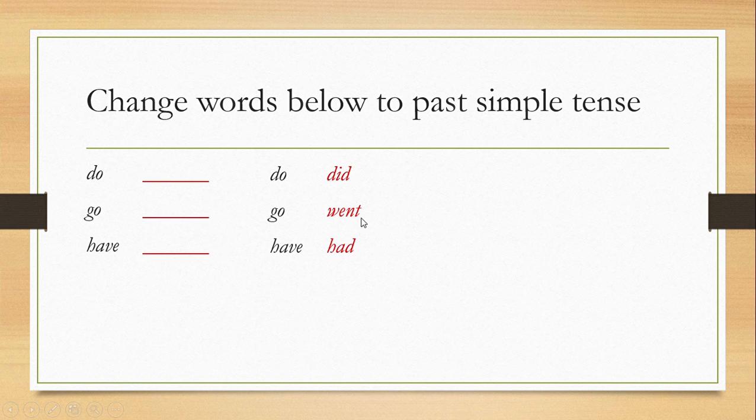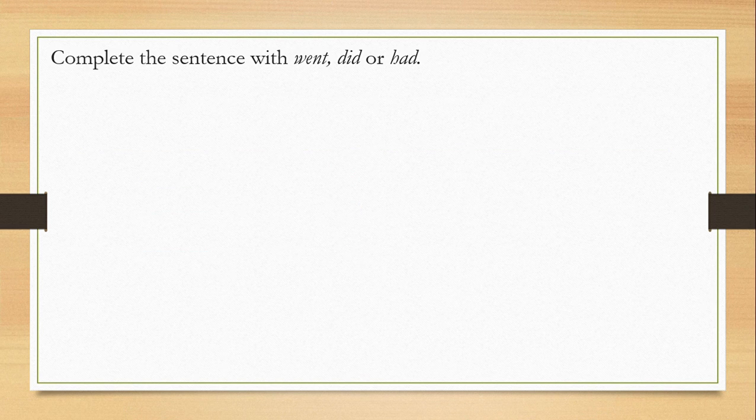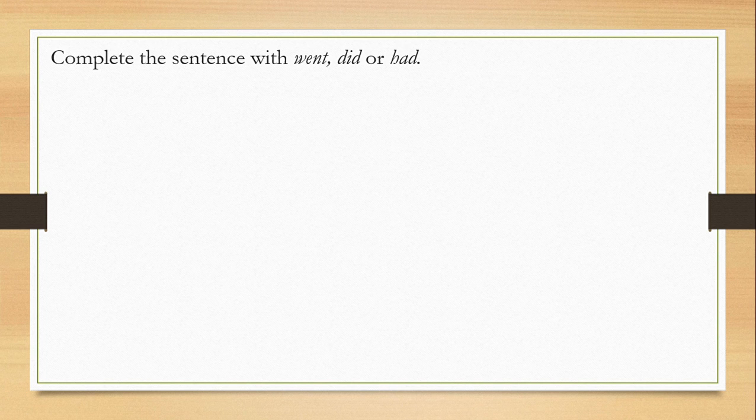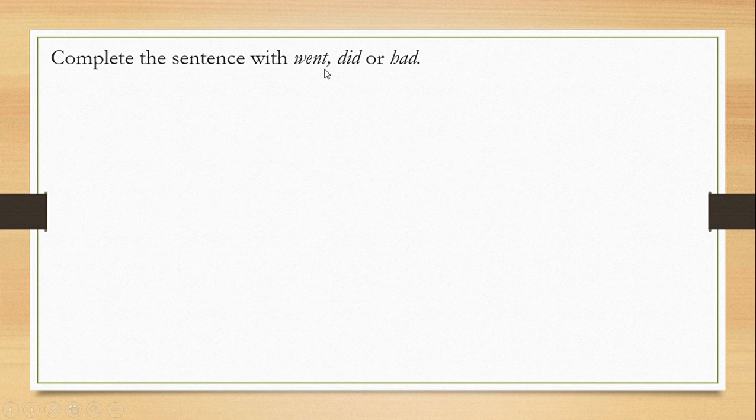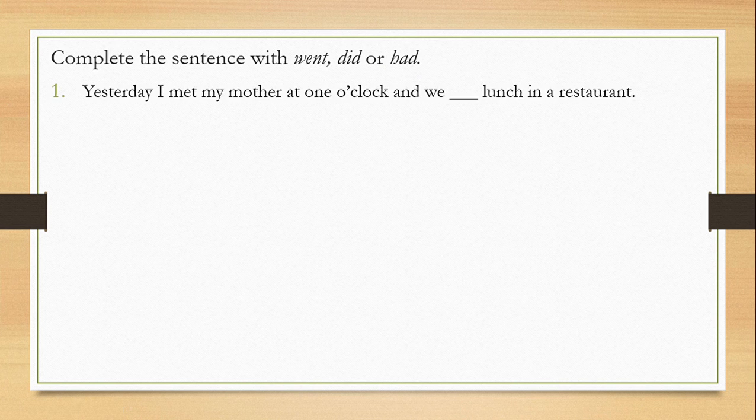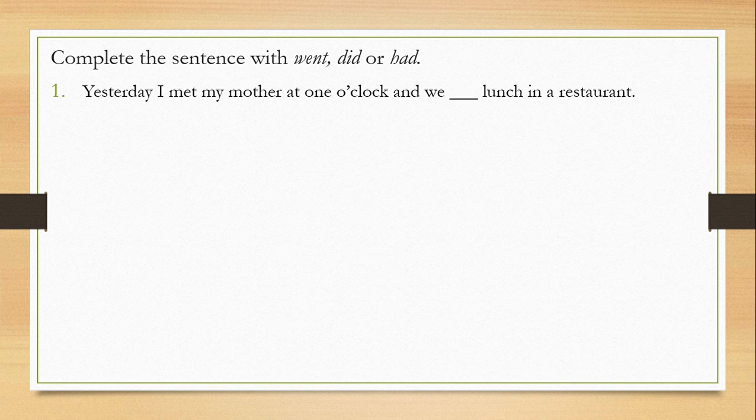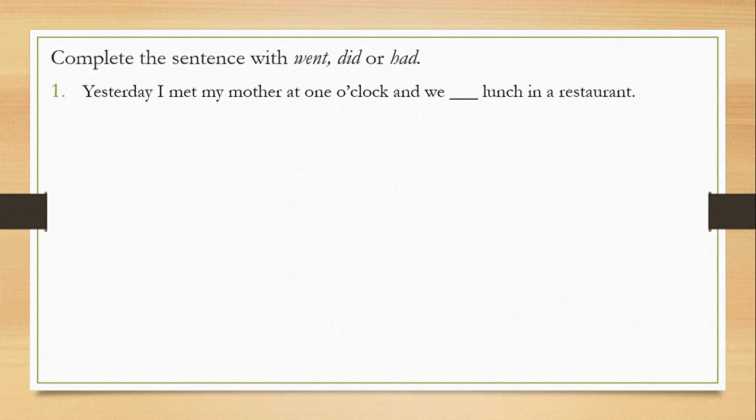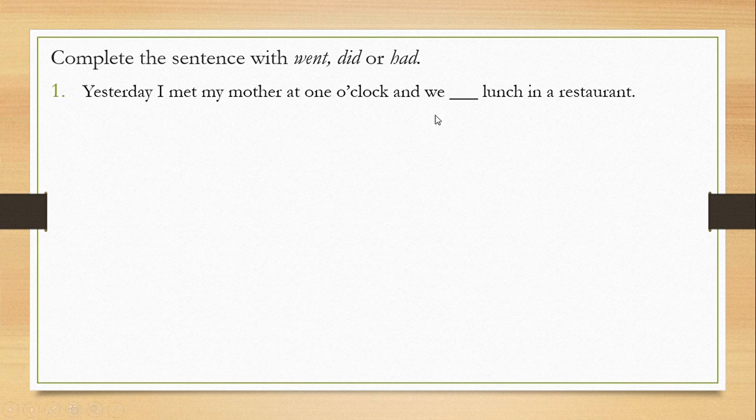Complete the sentence with went, did, or had. So what is the present tense of went? Go, right. Did - do. And had - have. Sentence number one: Yesterday I met my mother at one o'clock and we [blank]. You already learned about this, so you have to put the answer here.